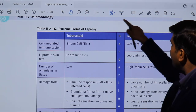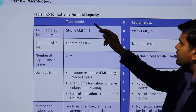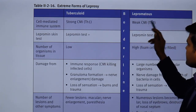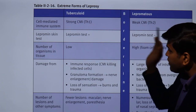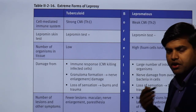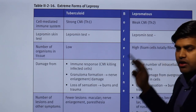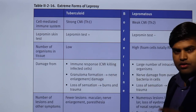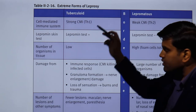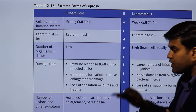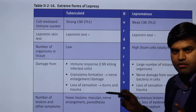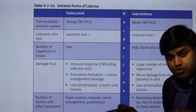The two extreme forms of leprosy are tuberculoid (initial) and lepromatous (advanced). In tuberculoid form, cell-mediated immunity is strong initially as the body fights the organism. The lepromin test — similar to the tuberculin test and a type 4 hypersensitivity reaction — is positive in the initial tuberculoid stage because immunity is intact. In the advanced lepromatous stage, immunity fails and the lepromin test becomes negative.